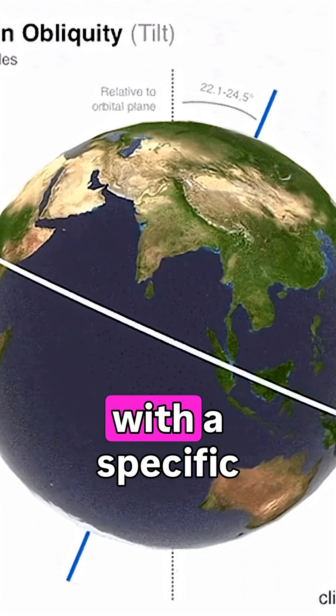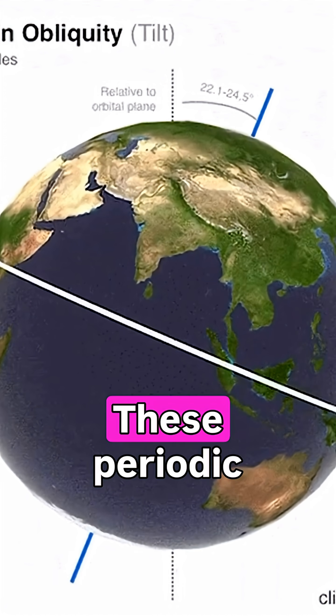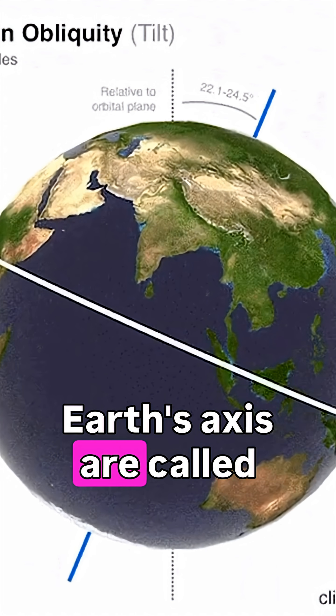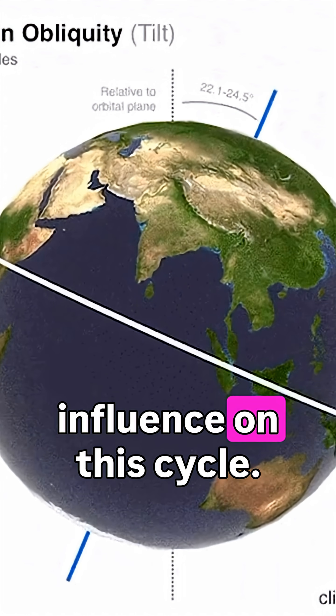It changes very slowly with a specific period that is about 41,000 years. These periodic changes in the tilt of Earth's axis are called nutations. The Moon is the main influence on this cycle.